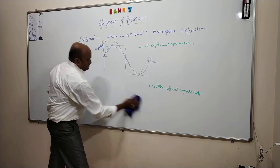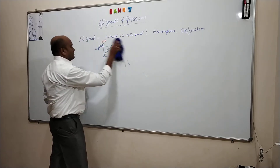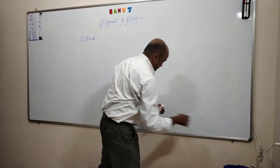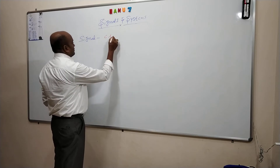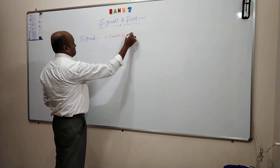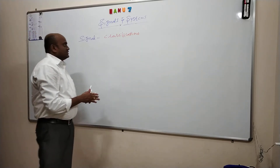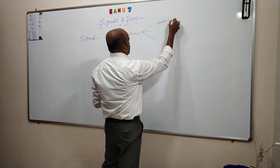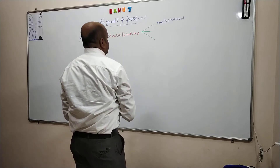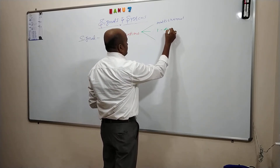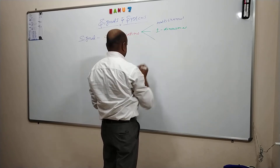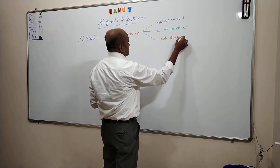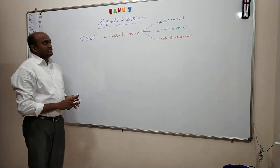Now coming to signal classifications. There are two types of classifications. Signals are classified as multichannel, and they are also classified as one-dimensional or multidimensional. So signals are of three types: multichannel, one-dimensional, and multidimensional.